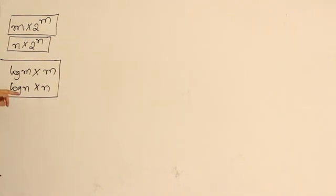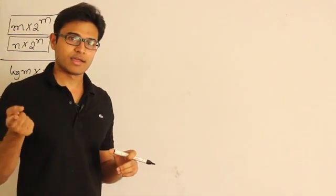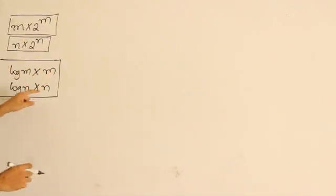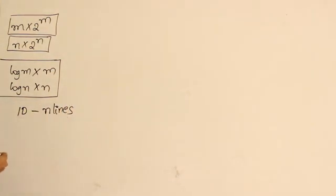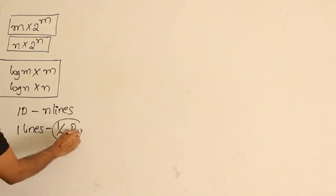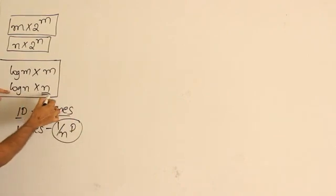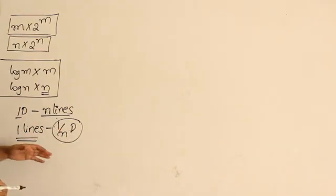One thing you should know is that if the decoder is of type log(n) by n, it means it is able to cover n output lines. If I have n output lines, they can all be covered by one device — so one device is capable of covering n lines. Therefore, you can also say that one line could be covered by 1/n devices.